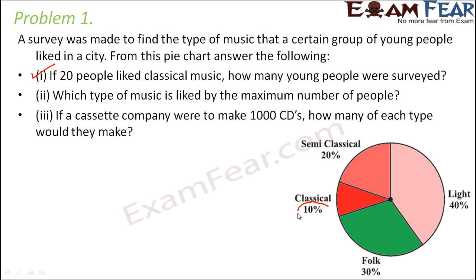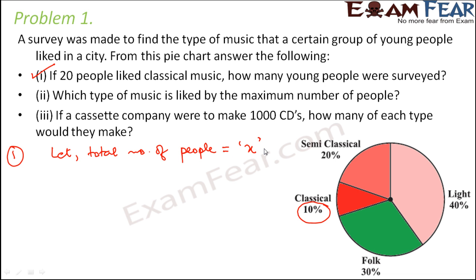Looking at this pie chart, we see that 10% of the people like classical music. We do not know the total number of people — that is what is being asked: how many people were surveyed? Let us assume the total number of people surveyed is x. So 10% of x liked classical music, but as per the question, exactly 20 people liked classical music. That means 10% of x is equal to 20.